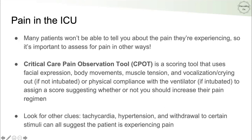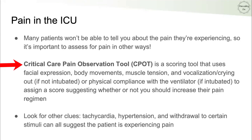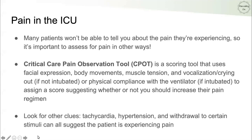For pain in the ICU, many patients won't be able to verbally report their pain, so it's important to assess for pain in other ways. The Critical Care Pain Observation Tool (CPOT) is a scoring tool that helps determine whether to increase a patient's pain regimen. Other clues include tachycardia and hypertension, which can be associated with pain — especially in non-responsive patients on the ventilator.